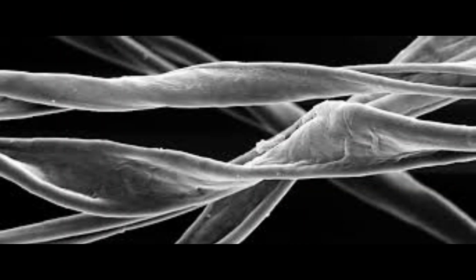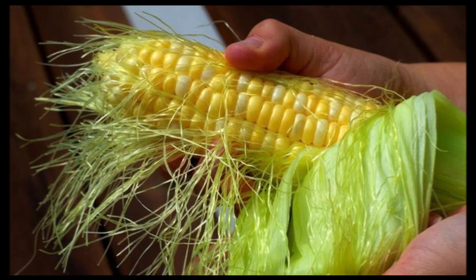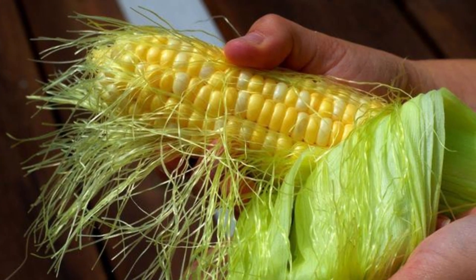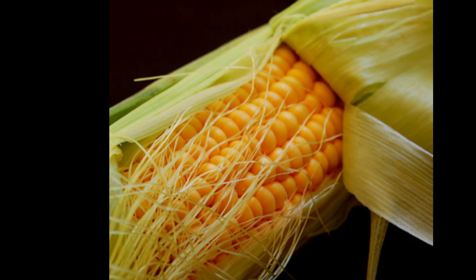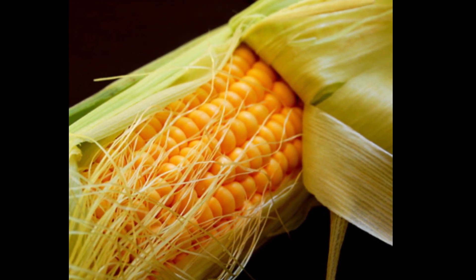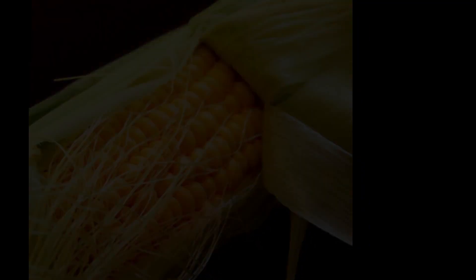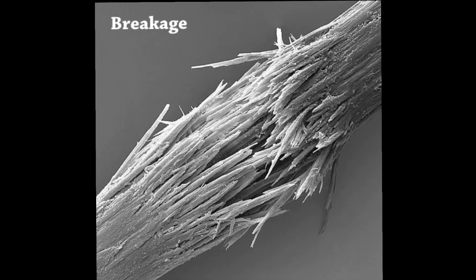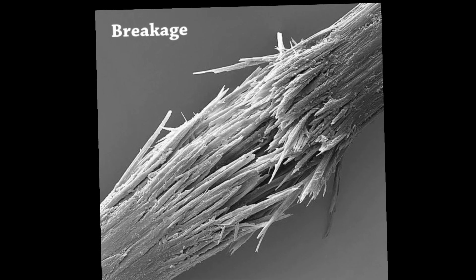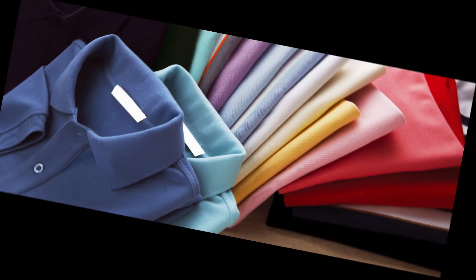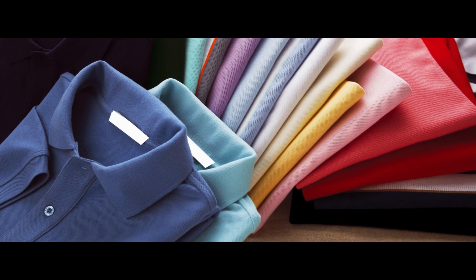On the other hand, have you ever noticed the little strings in your corn on the cob? This hair-like structure is technically fibers. However, they are too weak to be spun into yarn without breaking, so they are unsuitable for textiles.